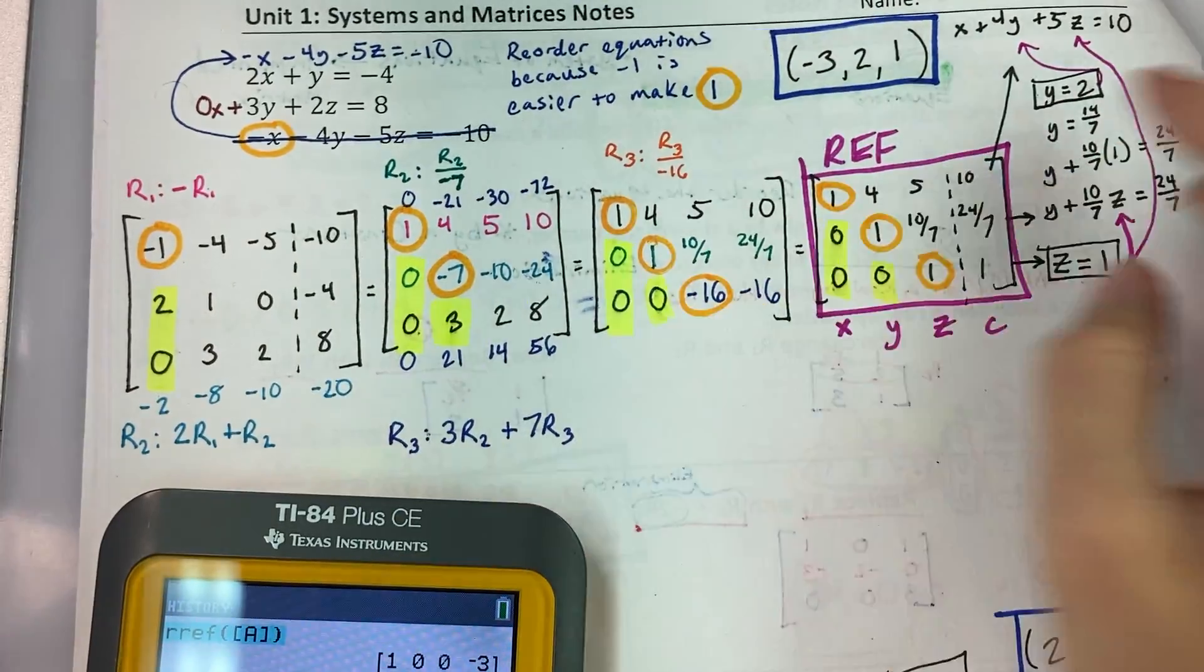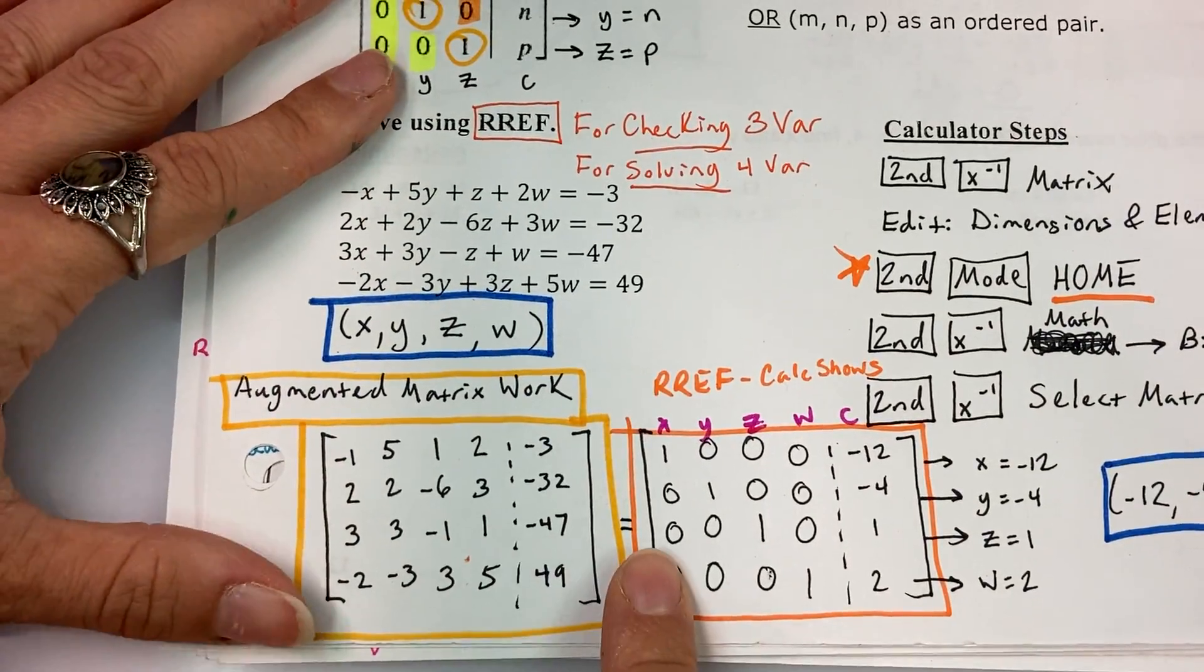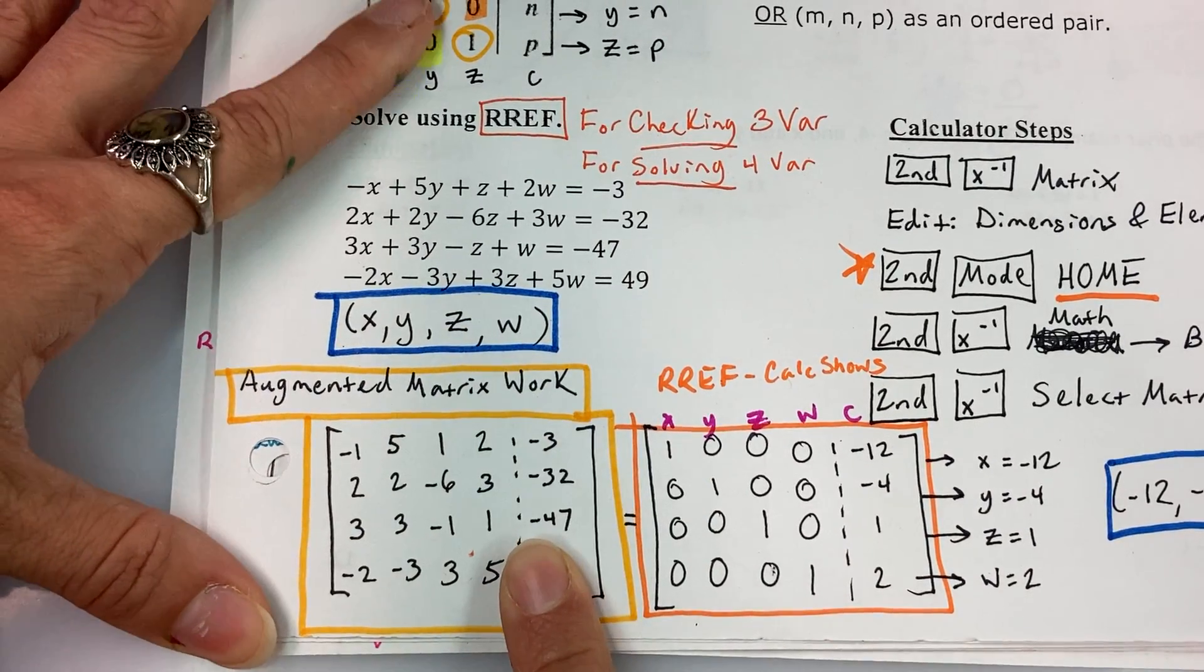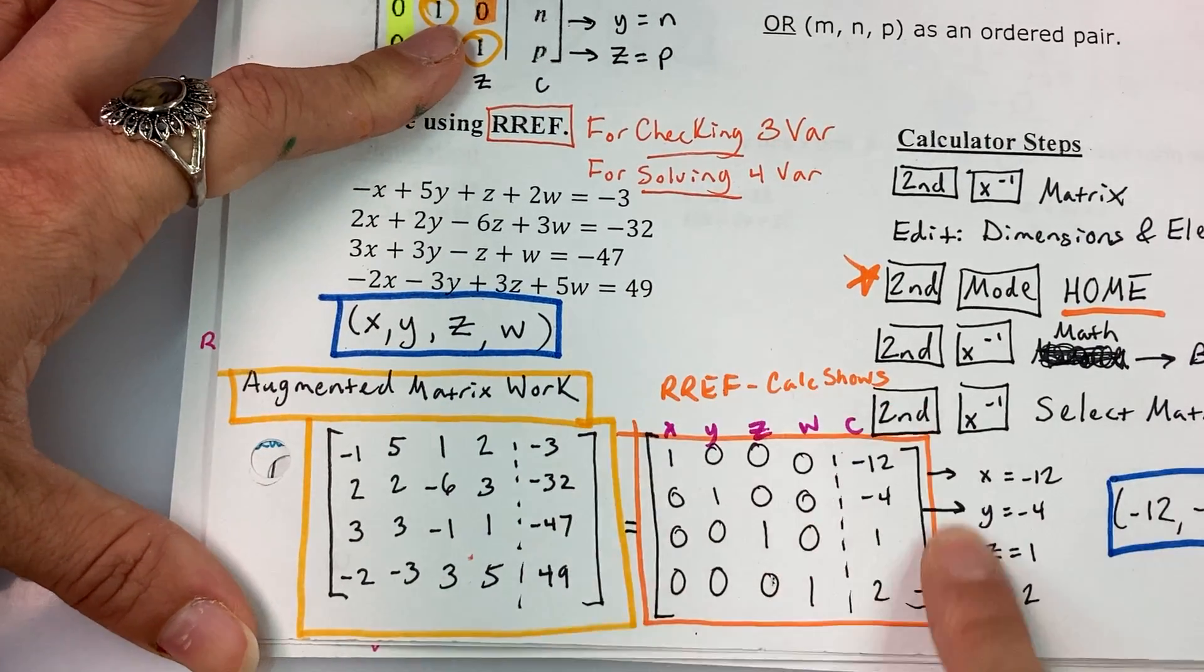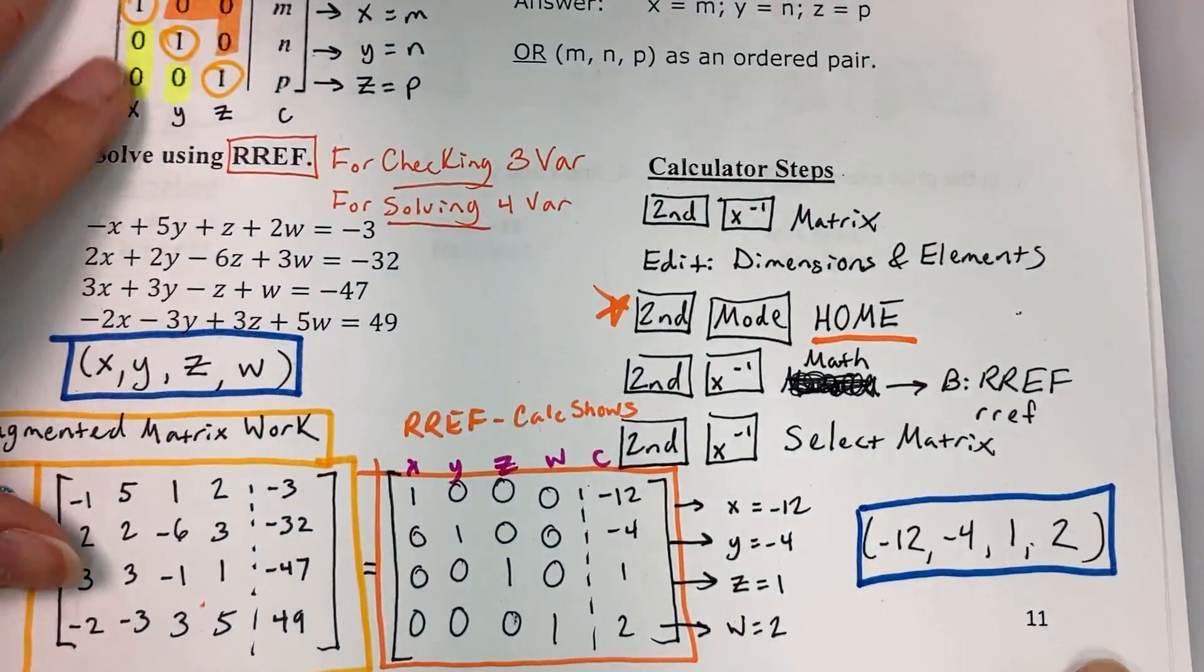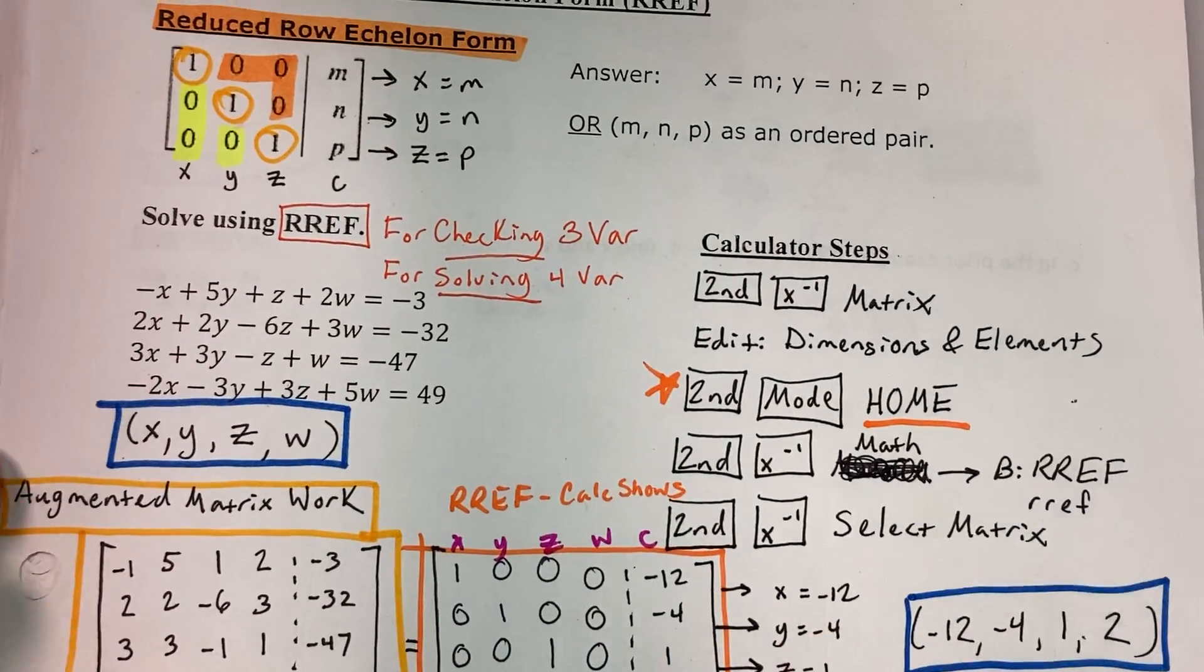Still have to show all that lovely row up stuff, but you can use it to solely do the four variable systems. But I will want to see your augmented matrix work. I will want to see what that reduced row echelon form matrix looks like, and then your final coordinate answer. And that concludes our first calculator example.